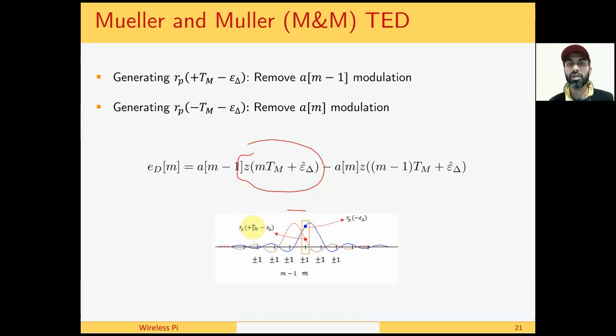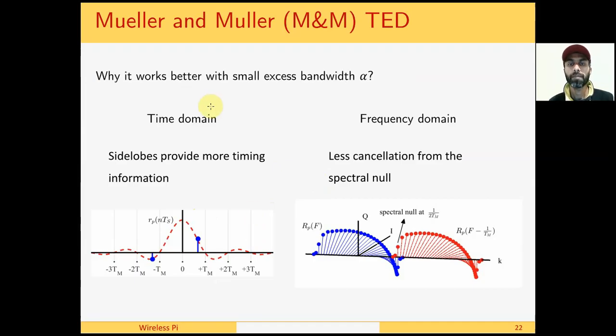A question that frequently arises: why does M&M TED work well with small excess bandwidth alpha? Although the derivative TED, zero-crossing TED, and other timing error detectors work well with large excess bandwidth, the reason in time domain is that if the pulse shape has a large excess bandwidth, then the time sidelobes are very small and there is not much timing error information. On the other hand, a small excess bandwidth implies large lobes in time domain, and the sidelobes provide more timing information.